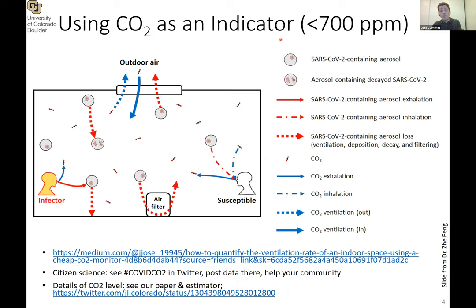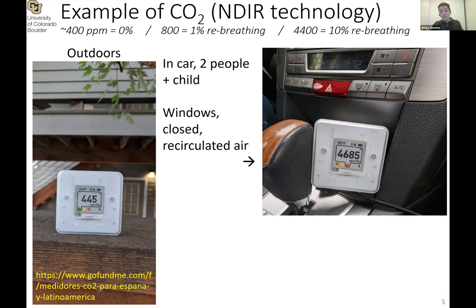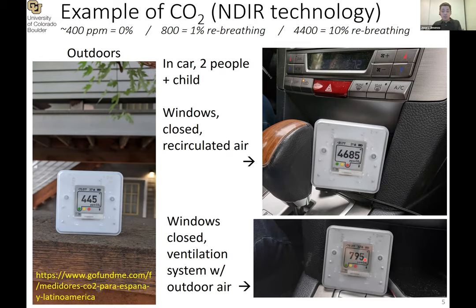We also calculate the concentration of carbon dioxide, CO2. This is a very useful indicator because when someone is exhaling the virus they are also exhaling CO2, and many of the processes that affect the virus — such as ventilation or being breathed in by someone else — also affect CO2. We have devices that cost only between $100 and $200 with NDIR technology that can measure CO2 well. Outdoors we see around 400 parts per million, while in a poorly ventilated car we measured over 4,000 ppm, meaning 10% of the air was being re-breathed. When we started ventilating, the concentration dropped significantly.